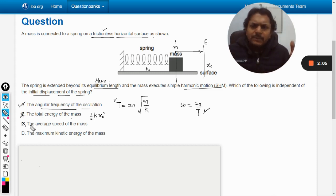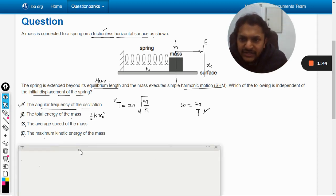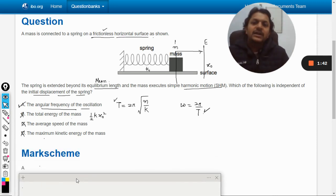Maximum kinetic energy? Not at all, because the total energy is more, so the maximum kinetic energy is also directly proportional to the square of the amplitude. So we can say that yes, the answer will be A. Let us check the mark scheme. Yes, the answer is A.